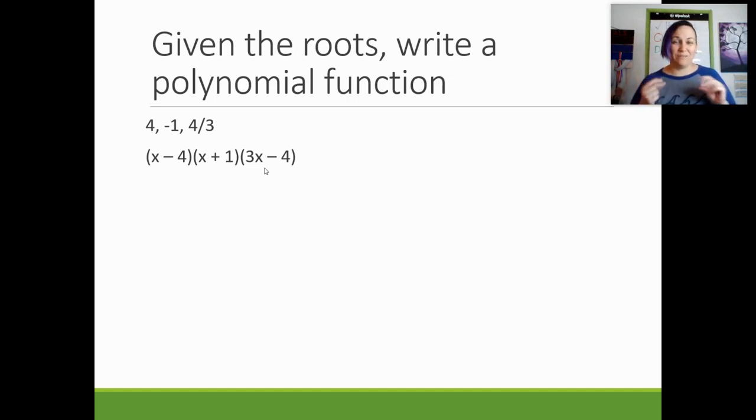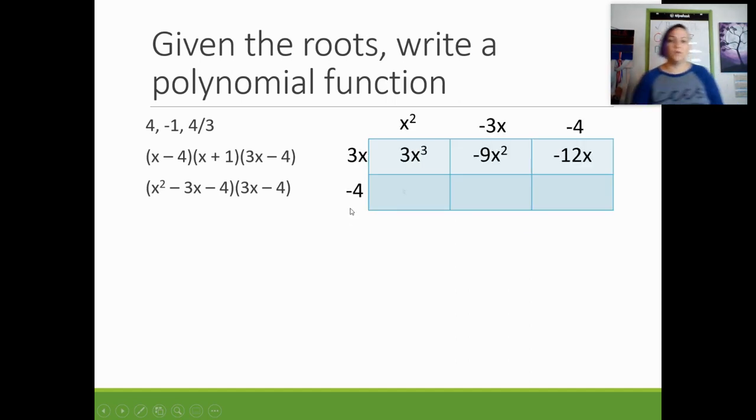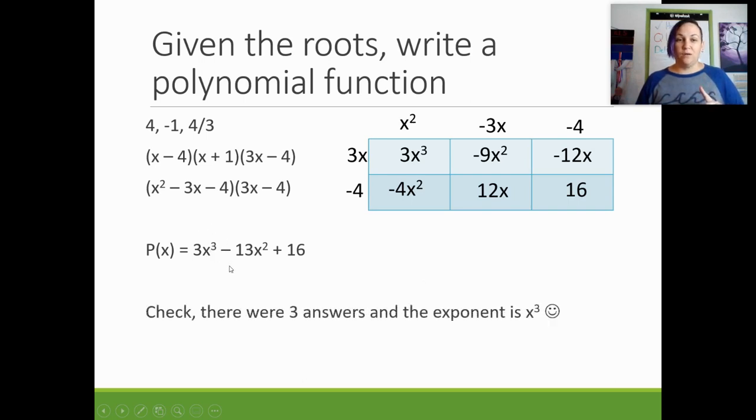Now I'm going to go through this one really quickly because I'm trying to make these videos just a little bit shorter. So we're going to multiply two parentheses at a time. So I went ahead and multiplied these two, and then next I would multiply those two. You can do box, you can do foiling. I don't care what method you use as long as you're getting the right answer. So this is my final answer. This is the polynomial function that when I solve it, I would get the answers 4, negative 1, and 4 thirds. One other thing I want to point out, this has an exponent of 3, and they initially gave me three answers. So that's a good sign. That means I'm doing it correctly.